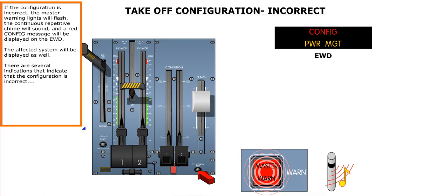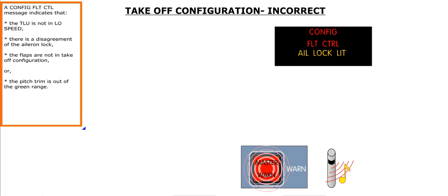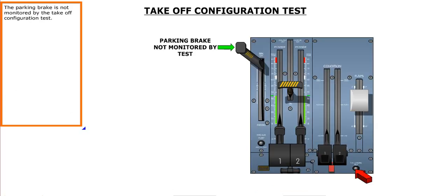The affected system will be displayed as well. A configuration flight control message indicates that the TLU is not in low speed, there is a disagreement of the aileron lock, the flaps are not in takeoff configuration, or the pitch trim is out of the green range. The parking brake is not monitored by the takeoff configuration test.